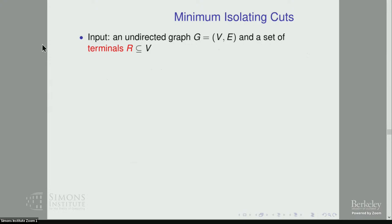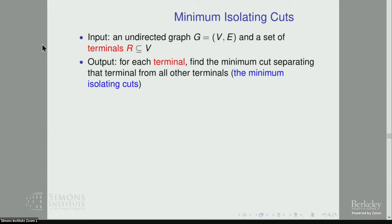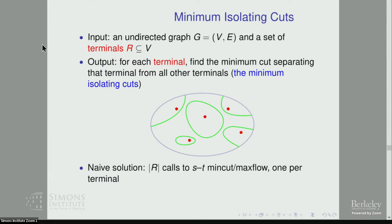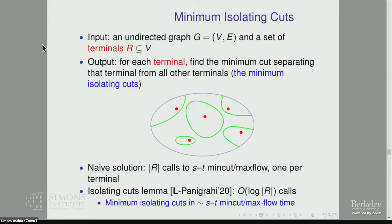Let me define the minimum isolating cuts problem. Given an undirected graph and a set of terminals, we want to output for each terminal the min cut that separates that terminal from all the other terminals — in other words, the cut isolating that terminal from everyone else. For example, if the red vertices are the terminals, then a set of isolated cuts assigns one such cut per terminal. It turns out the cuts can be assumed to be disjoint. The naive solution is simply to call ST min cut for each terminal, requiring as many calls as the number of terminals.